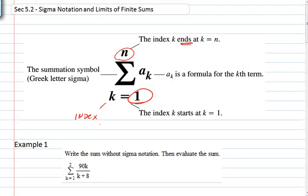So in example one, I have a problem with the sigma here and I want you to expand this without the sigma notation. Well what sigma means is we're summing. Summing means adding. So we start out with k equals to 1 down here and 90 times 1 because k is 1 divided by 1 plus 8. That's the first term.